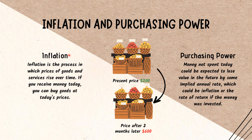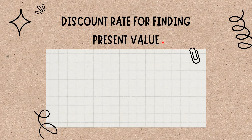The loss in value occurs by some implied annual rate, which could be inflation or the rate of return if the money was invested. The present value formula discounts the future value to today's dollars by factoring in the implied annual rate from either inflation or the rate of return that could be achieved if a sum was invested.